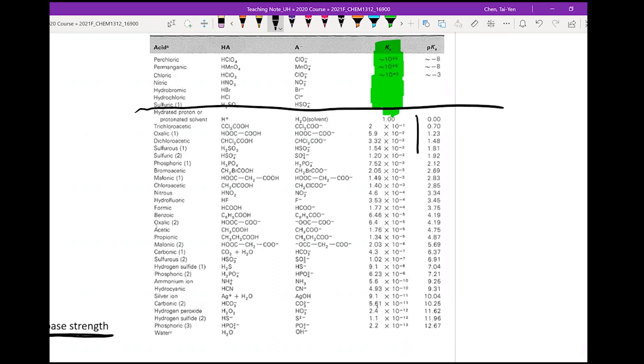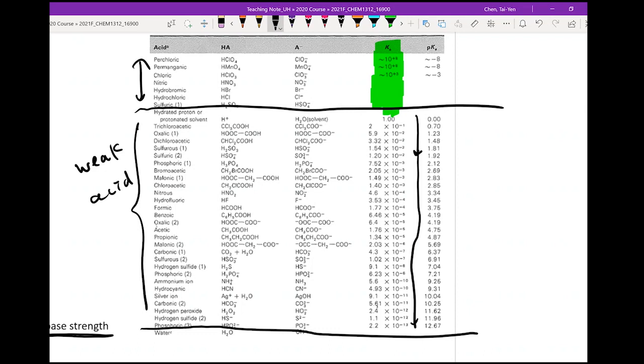Things you see below, all the way to here right above water - you can see the Ka ranges from 1 to 10^-13. All these are weak acids. Everything above is strong acid.